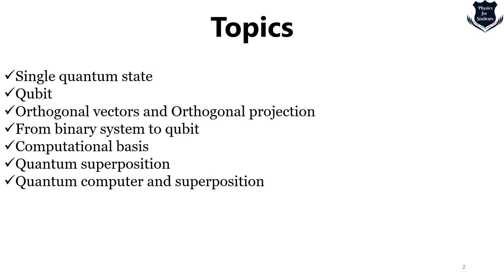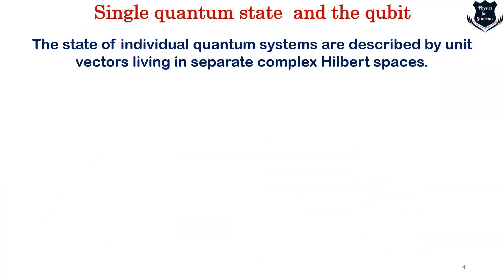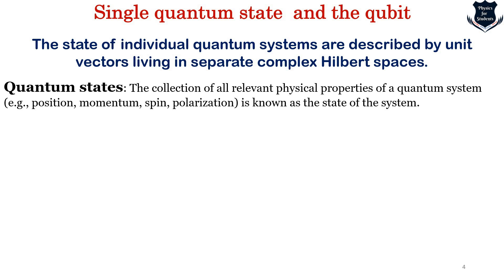First we would look into one of the definitions: what is a single quantum system and the qubit. The state of individual quantum systems are described by unit vectors living in separate complex Hilbert spaces. This is a kind of a definition or postulate of quantum mechanics. Now what do we mean by a quantum state? A collection of all relevant physical properties - position, momentum, spin, polarization - is known as the quantum system. As a tool for physics, quantum states actually grew out of states in classical mechanics.